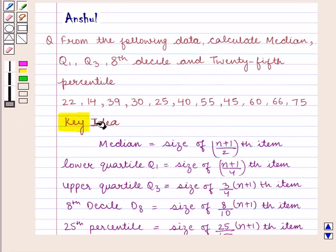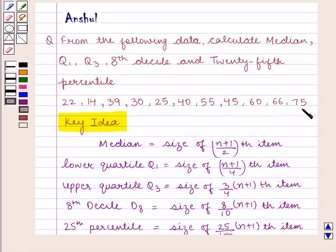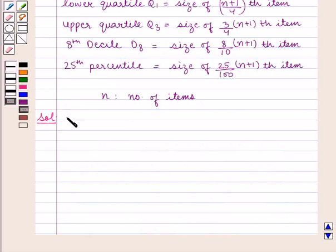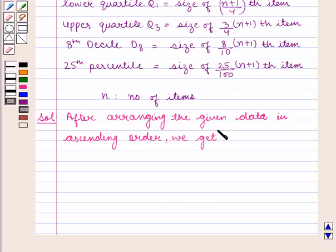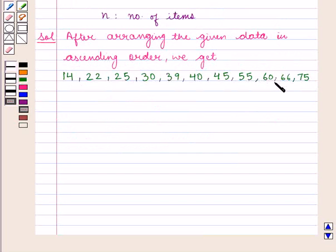With this key idea, let us proceed with the solution. Since we are given a simple distribution of data, we shall first arrange this data in ascending order. After arranging the given data in ascending order, the total number of elements, that is n, is equal to 11.